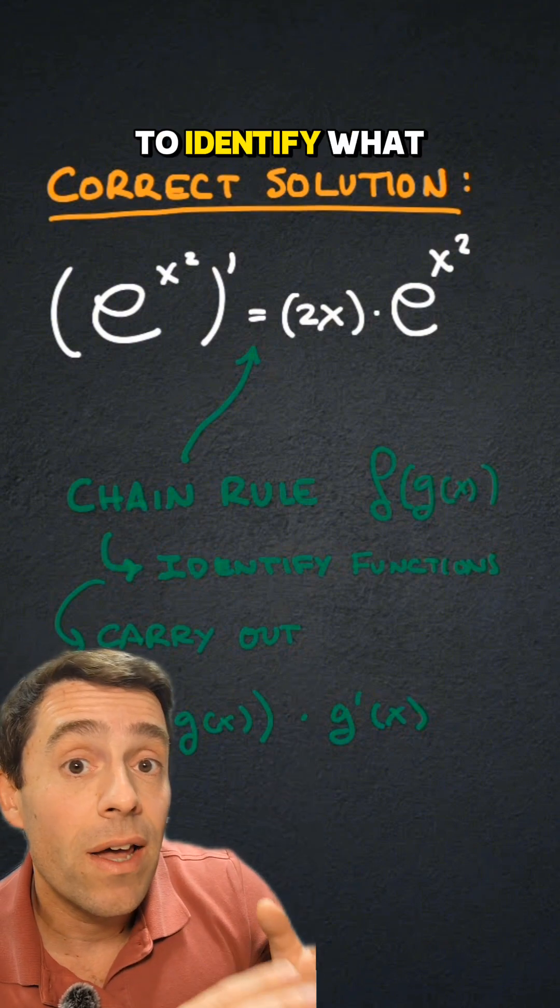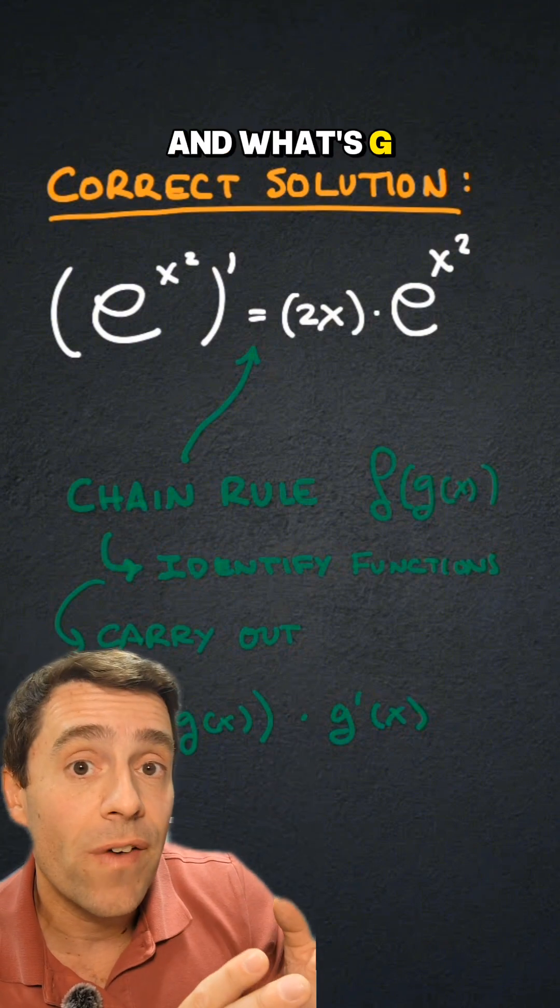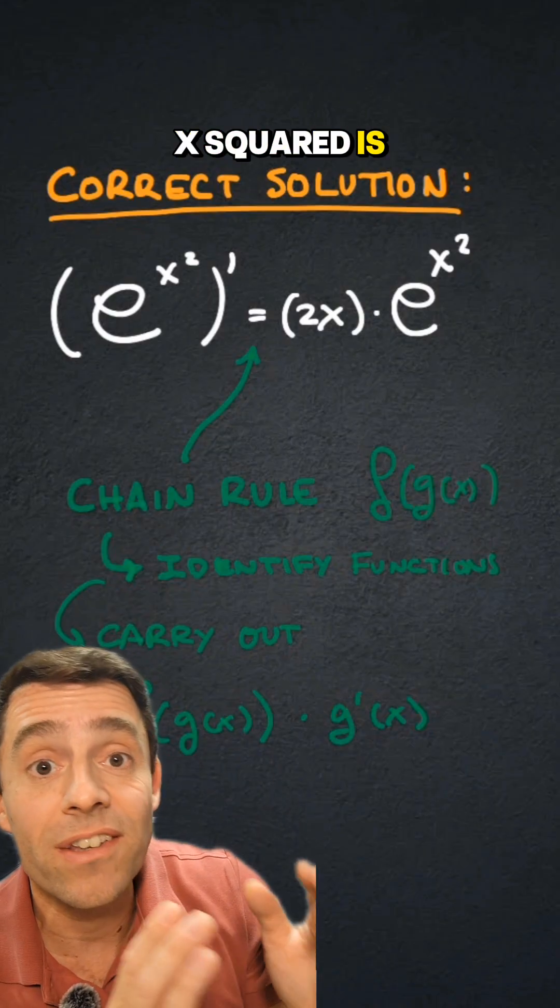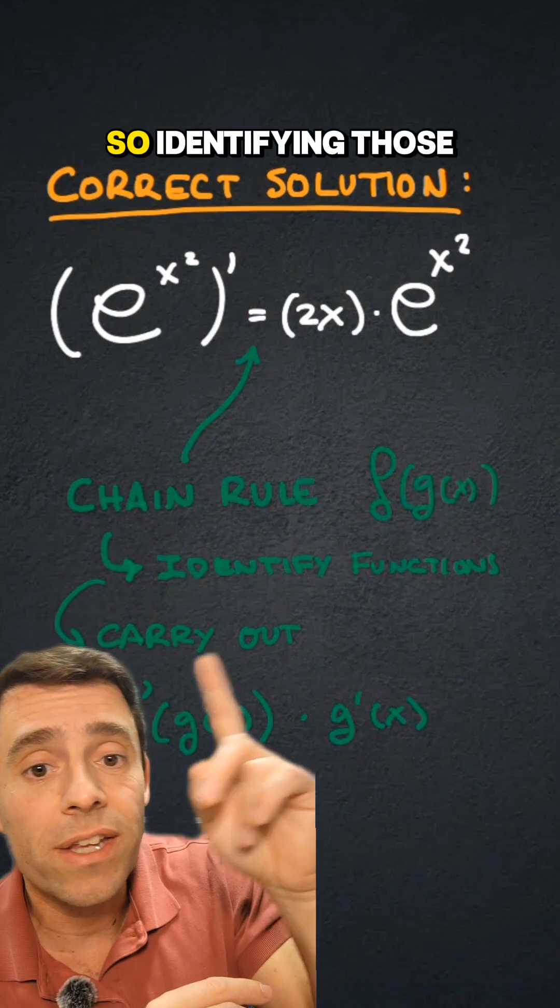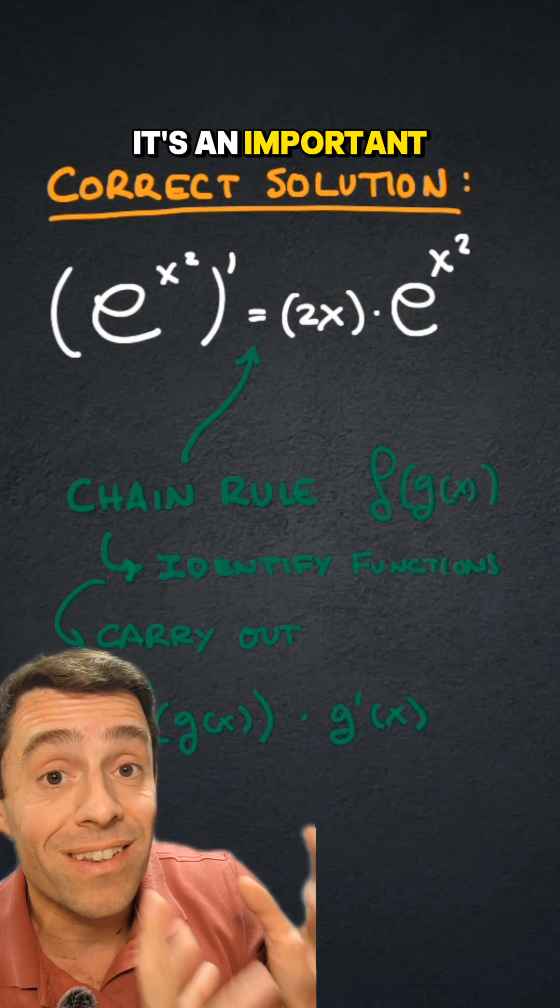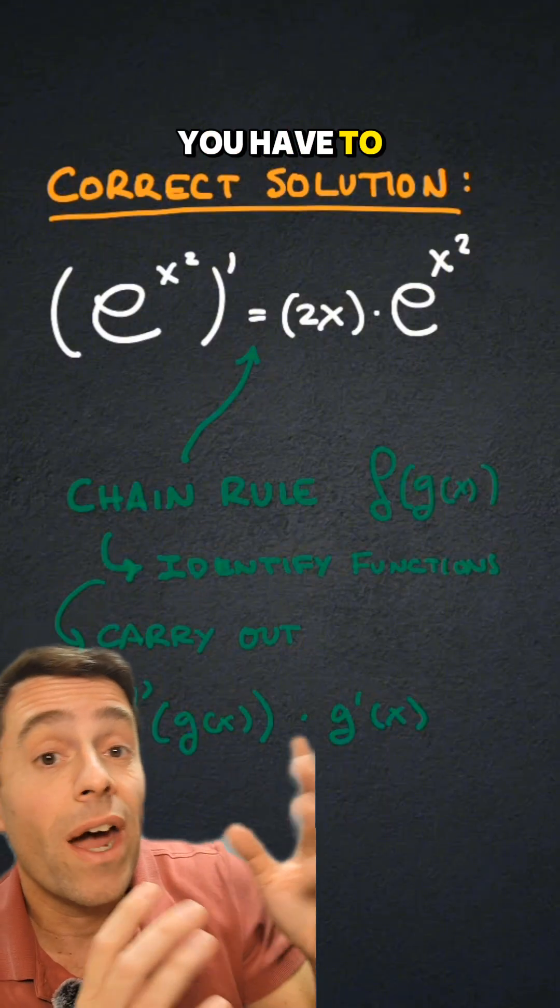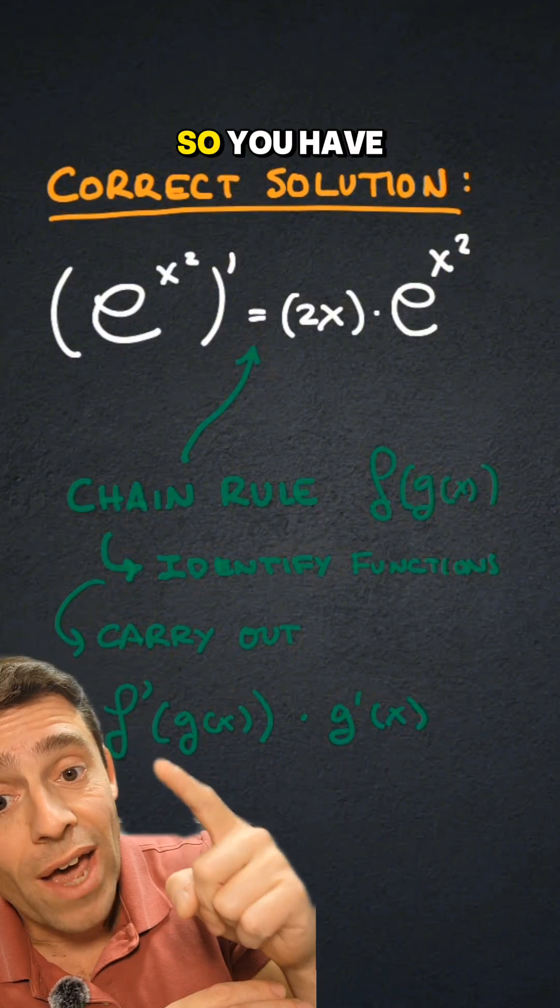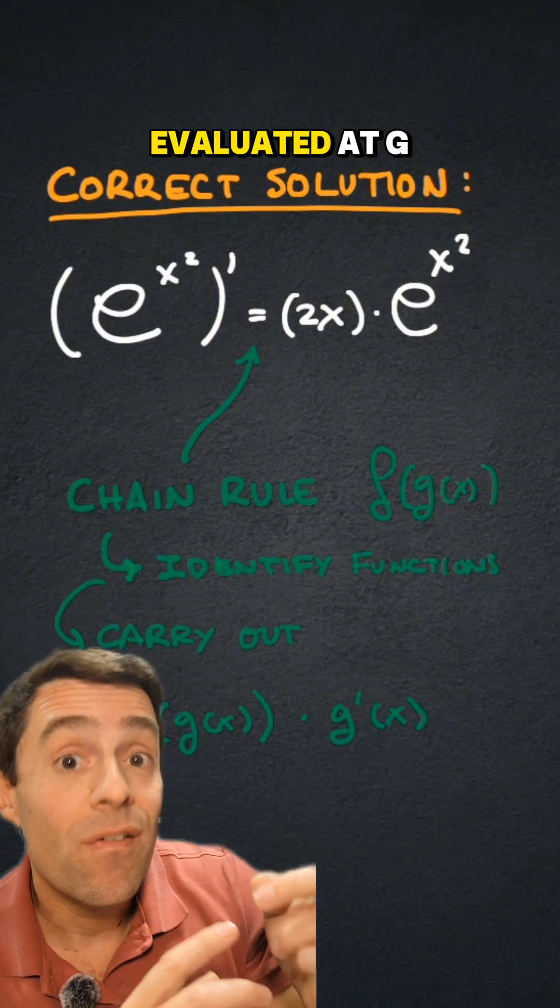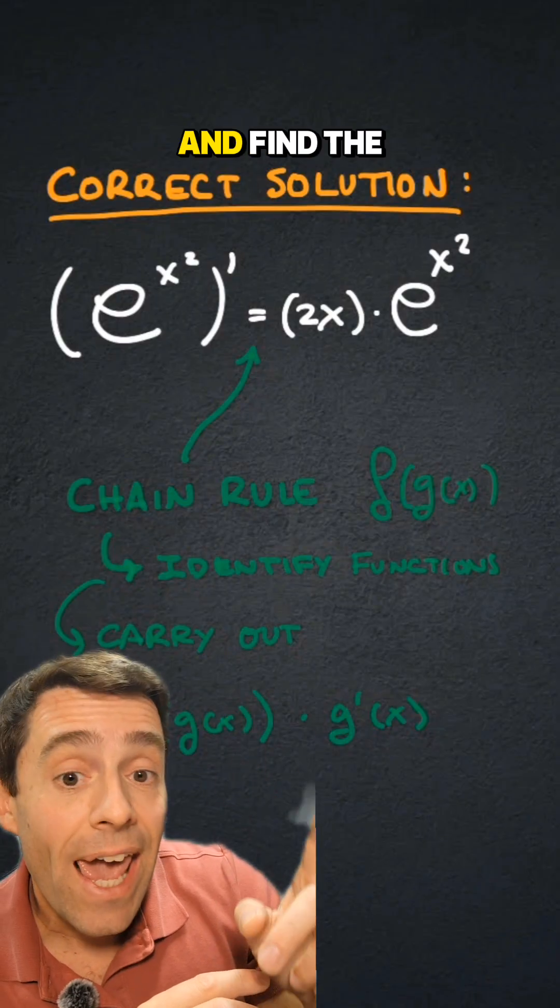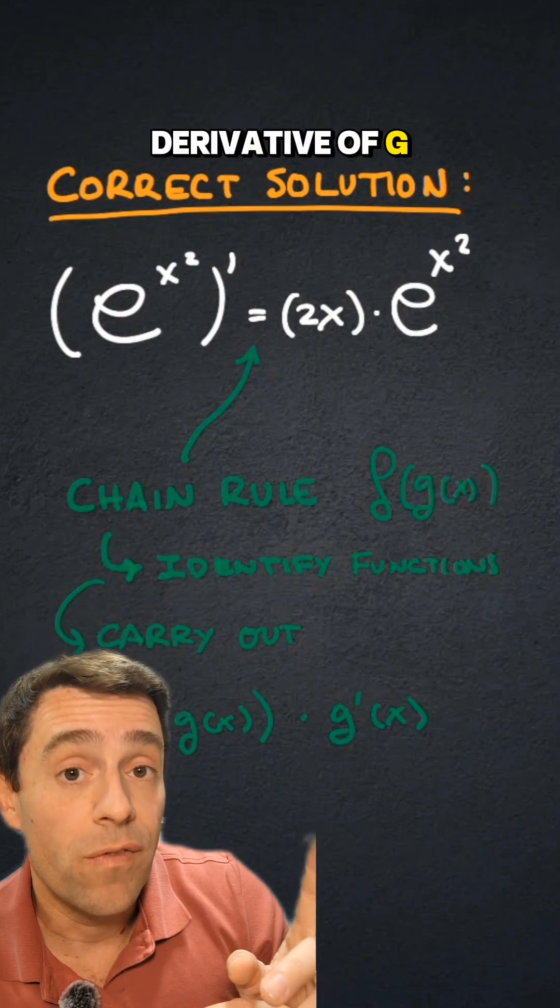Then we have to identify what is f of x and what's g of x such that e to the x squared is f of g of x. So identifying those functions is an important step. And then you have to carry out the chain rule, so you have to find the derivative of f, evaluate it at g of x, and find the derivative of g of x.